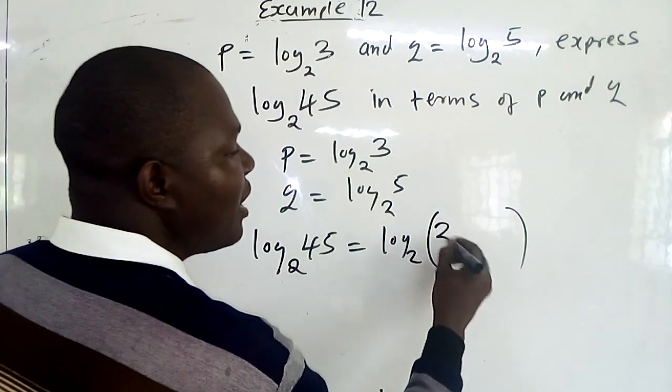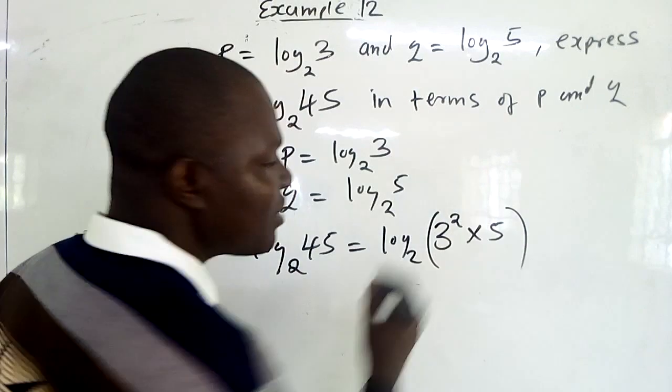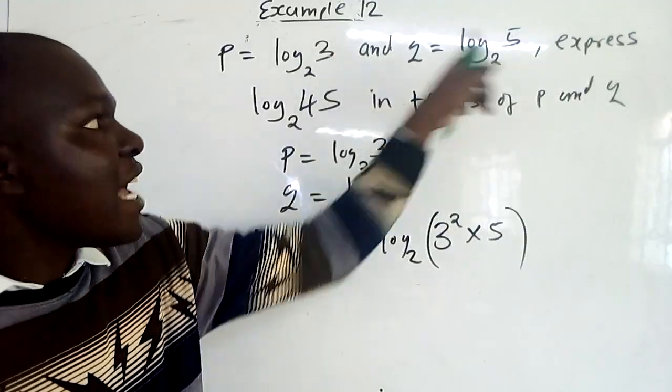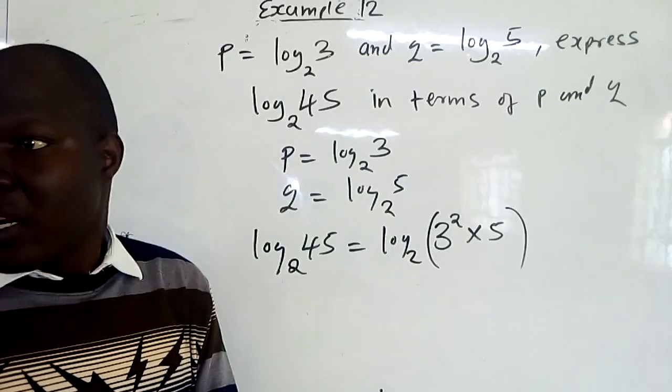But 9 is 3 squared times 5. So it is in terms of 3 and 5.